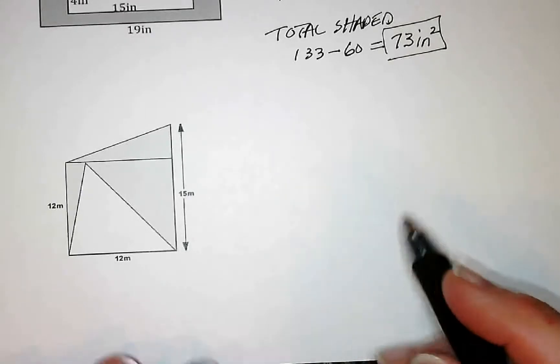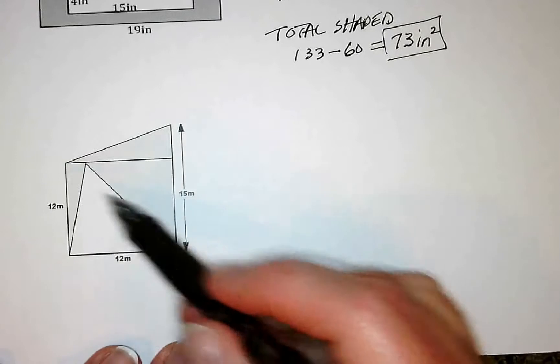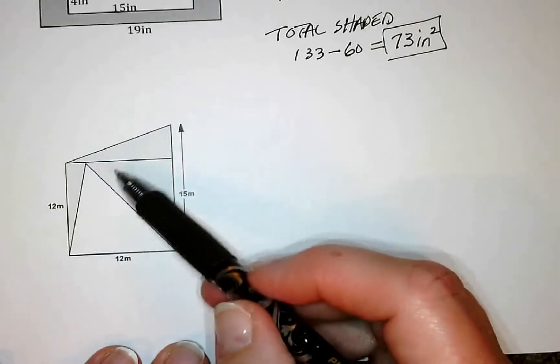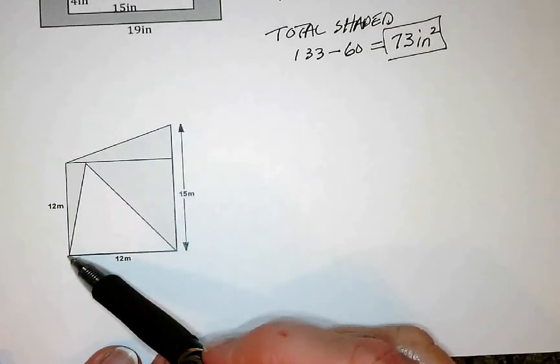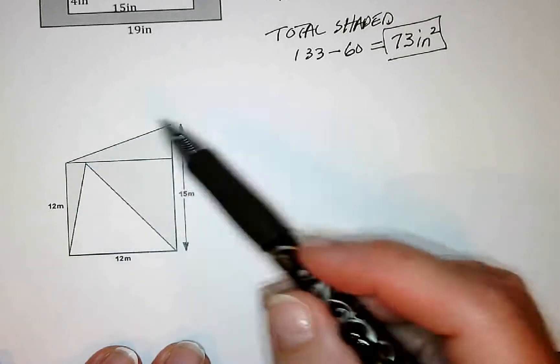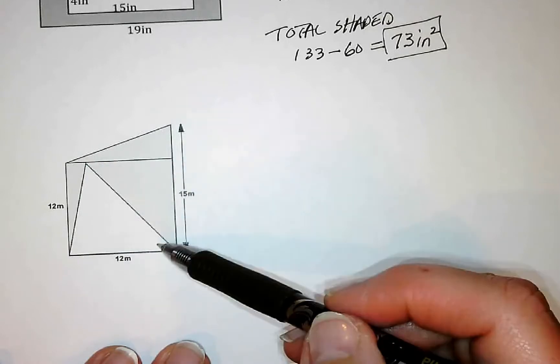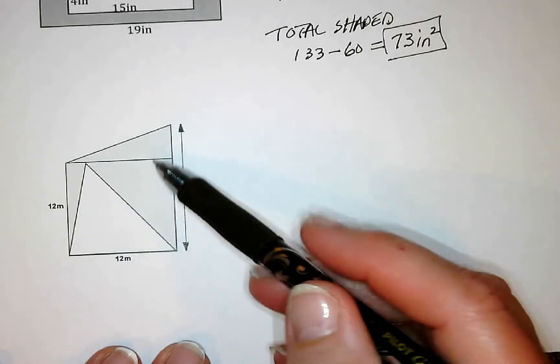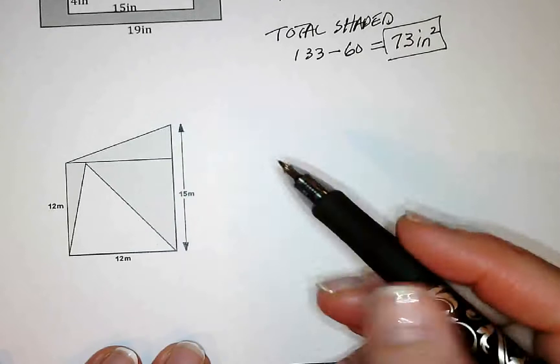My last one, as far as examples go, I can see here we've got a couple different shapes going on. The one that's probably the most obvious is this square right here, which is 12 by 12. That means all four sides are 12. We've got a triangle inside here that we need to take out of the total, and then we've got another triangle up here on top.